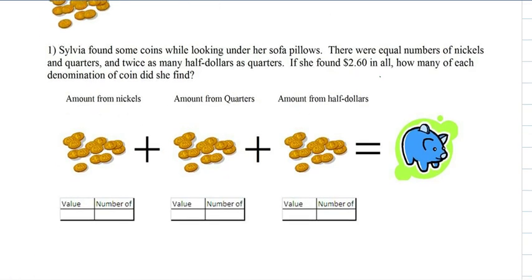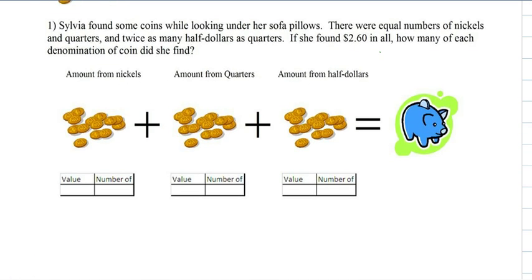Okay, so let's try a problem. Sylvia found some coins while looking under her sofa pillows. There were equal numbers of nickels and quarters and twice as many half dollars as quarters. If she found $2.60 in all, then how many of each denomination of coin did she find?